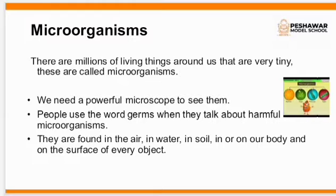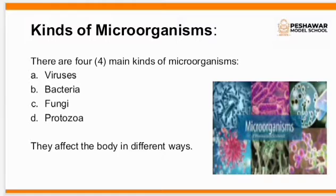We have to use a proper microscope to study about these organisms or to see the structure of these organisms. They are very tiny. There are basically four main kinds of microorganisms. These are viruses, bacteria, fungi, and protozoa. They affect the body in different ways.